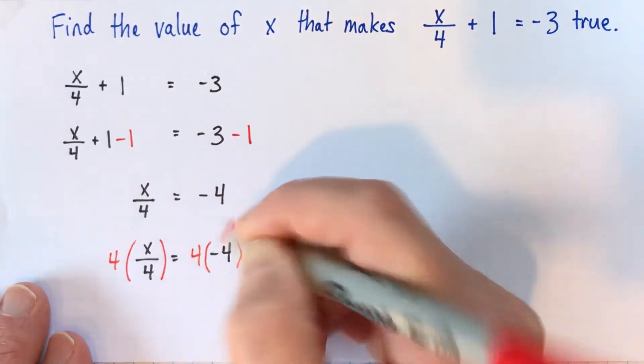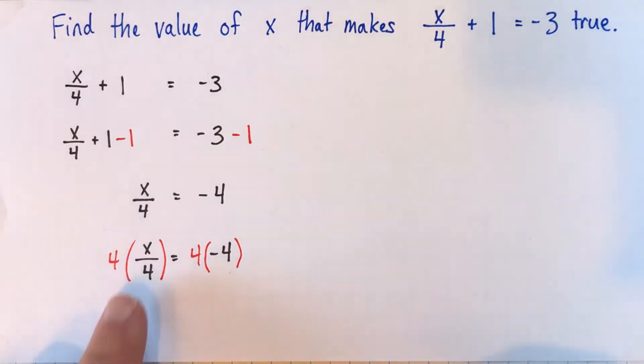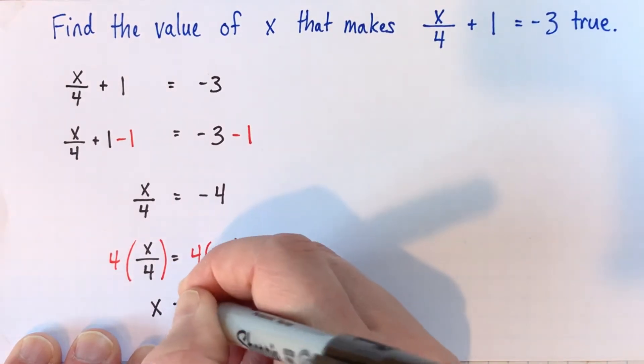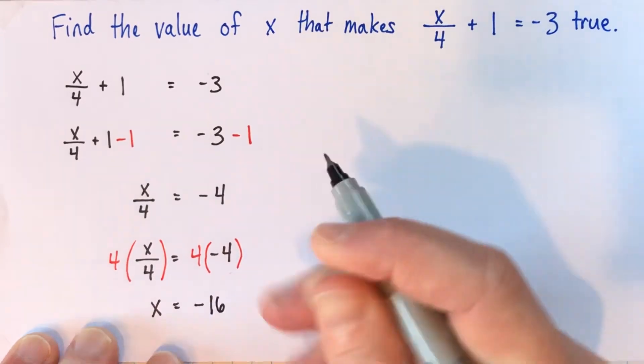And because we multiplied one side by 4, if we want to keep these two sides the same or equal, which is what that means, we have to multiply the other side by 4. So x divided by 4 times 4 just gives us x. And 4 times negative 4 is negative 16.